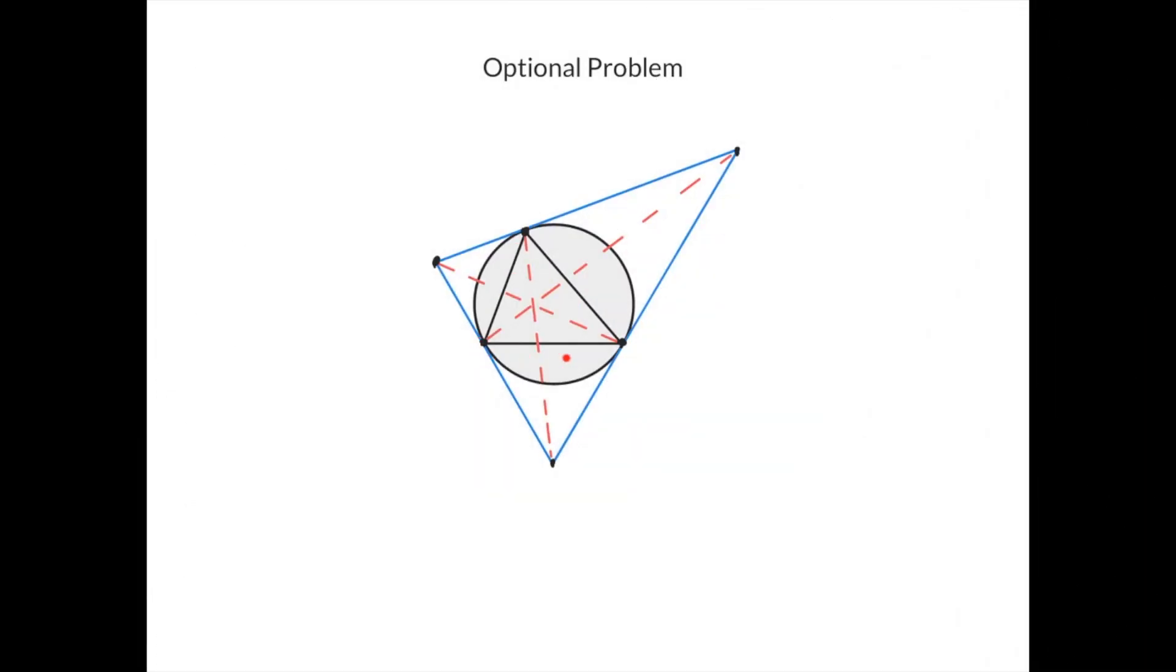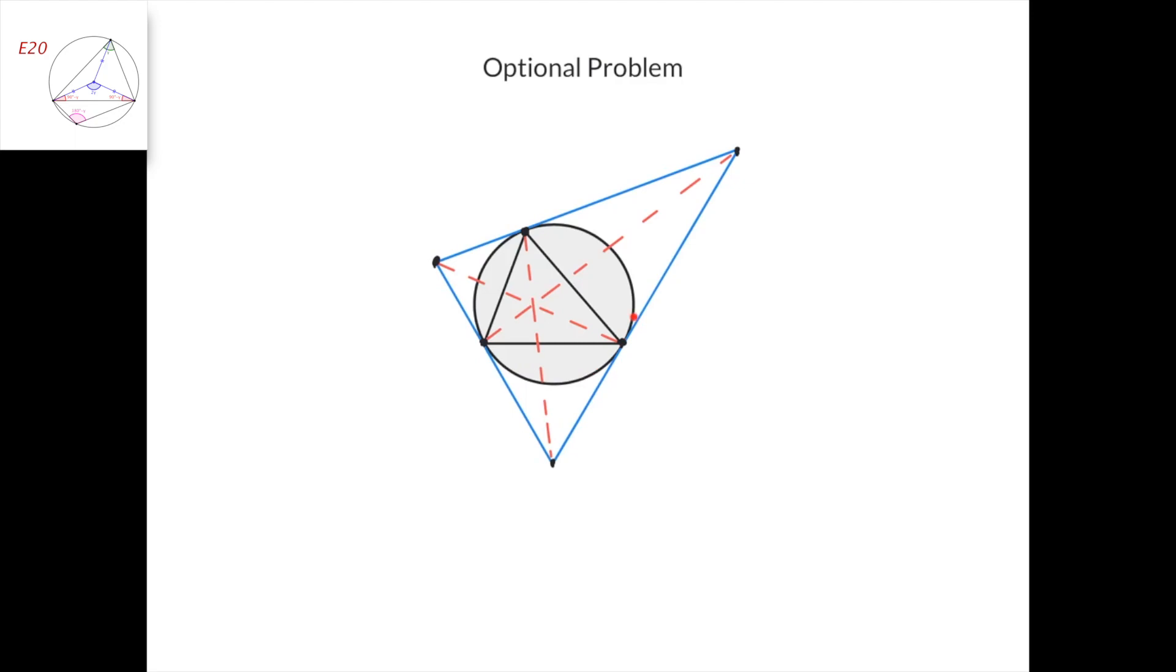Here is the optional problem. This is a triangle, and this is its circumcircle. At each vertex of the triangle, we've constructed a tangent line to the circumcircle.